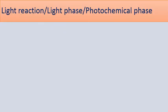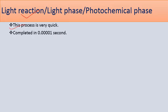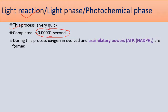The light reaction, also called the light phase or photochemical phase, is very quick, completing in 0.0001 seconds. In this process, oxygen evolves and assimilatory powers are made — that is ATP and NADPH. The main function of the light reaction is oxygen evolution and production of these assimilatory powers ATP and NADPH, and it leads to activation of the chlorophyll molecule.